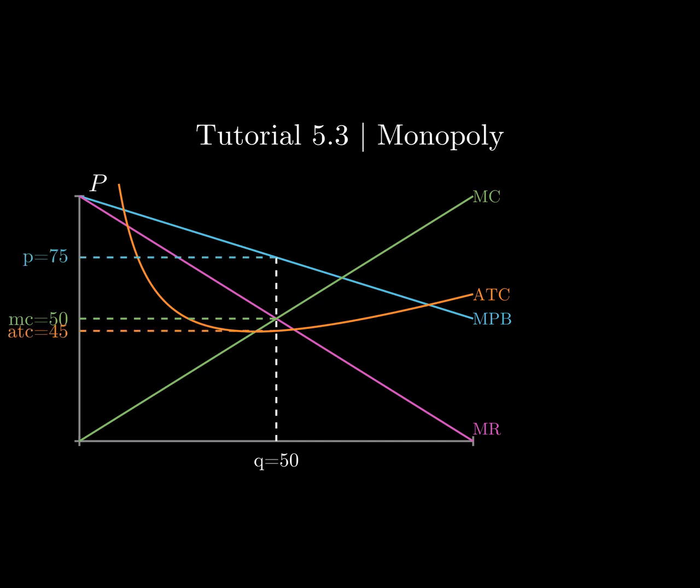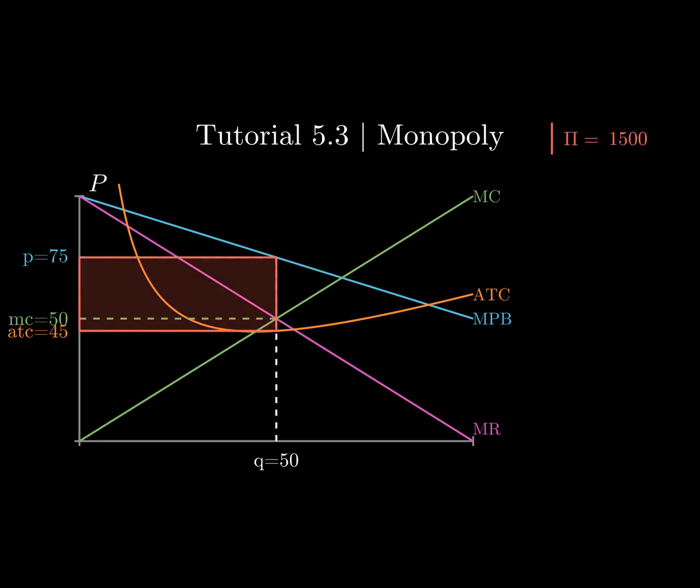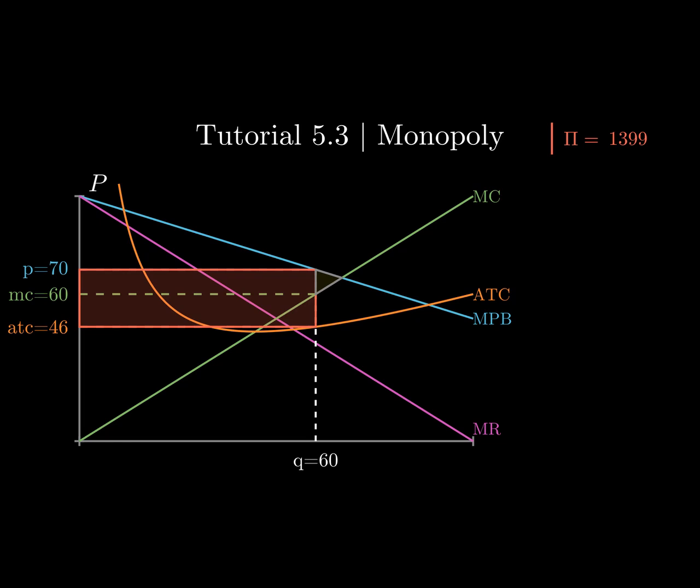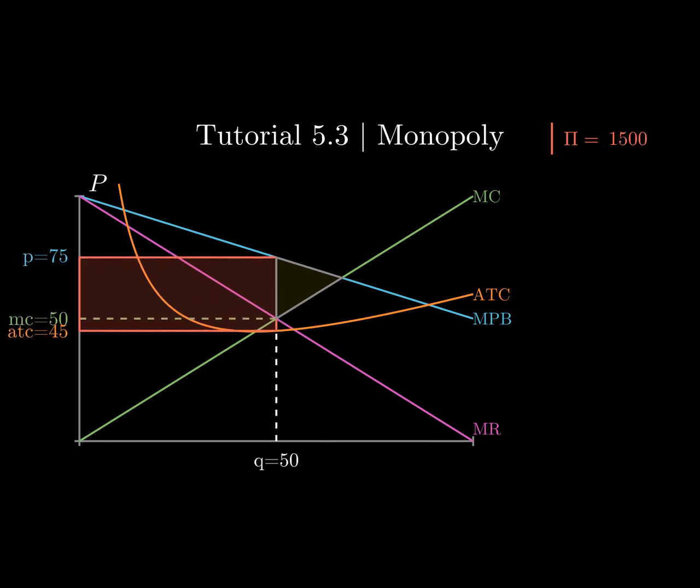Using price, average total cost, and quantity allows us to find the firm's profits. And here we can verify that marginal cost equal marginal revenue actually solves the firm's profit maximization problem. If we increase the quantity to 60, their profit goes down. And if we lower the quantity to 40, their profit also goes down.